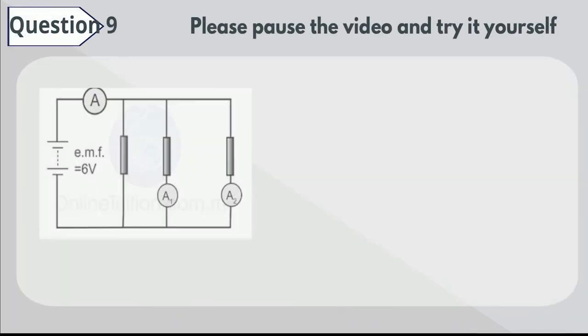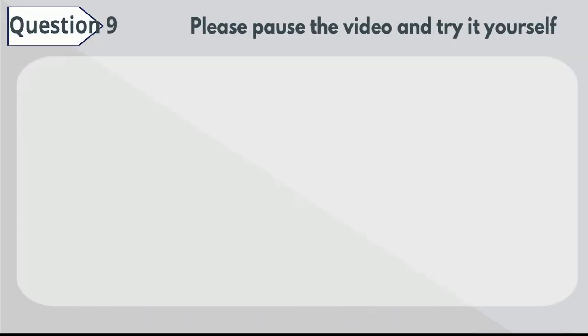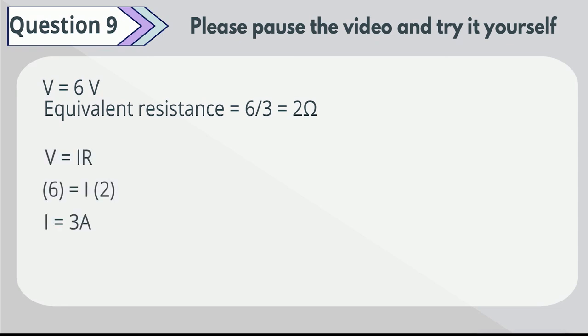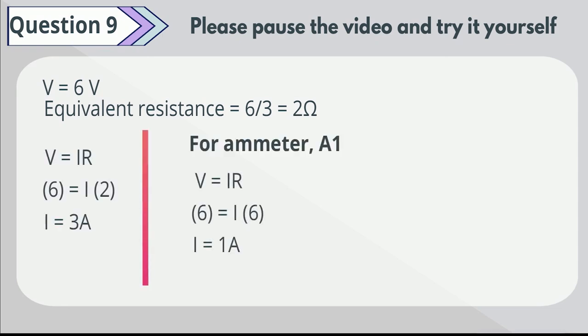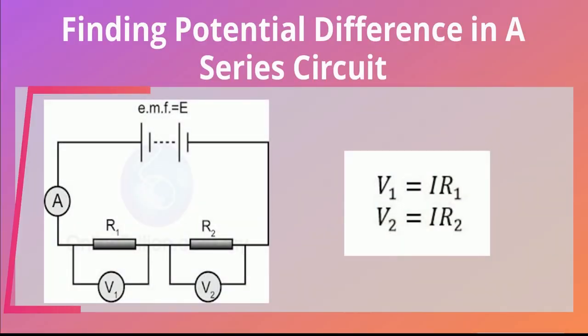Question 9. The figure shows three identical resistors connected in parallel in a circuit. Given that the resistance of each resistor is 6 ohms, find the reading of all the ammeters in the figure. Please pause the video to try this yourself. From the information given, the value of ammeter 1 is equal to 1 amp. The same goes for ammeter 2. In the circuit, if the current in the circuit is I, then the potential difference across each of the resistors is shown as follows.